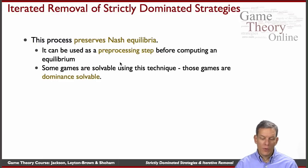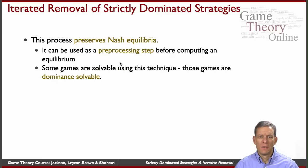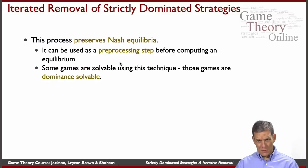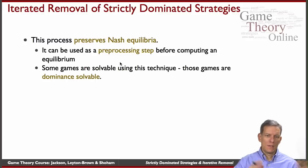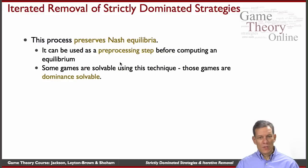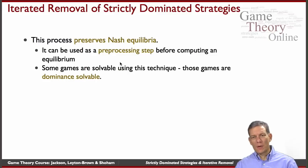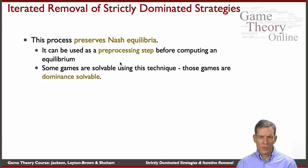One nice thing about iterative removal of strictly dominated strategies is that it preserves Nash equilibria. So you can use it as a pre-processing step — before you try to compute Nash equilibria, get rid of all the strictly dominated strategies and iterate on that. Some games, like the first one we looked at, tend to be solvable using this technique — that's called dominant solvability. If it actually collapses to a single point, you were able to solve the game just by using dominance arguments.